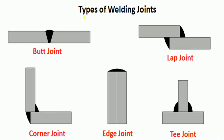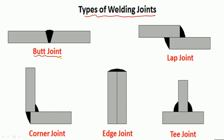These are some types of welding joints: lap joint, where one plate is lapped on the other; corner joint, where corners are joined; edge joint, where edges of two plates are joined; and T-joint.